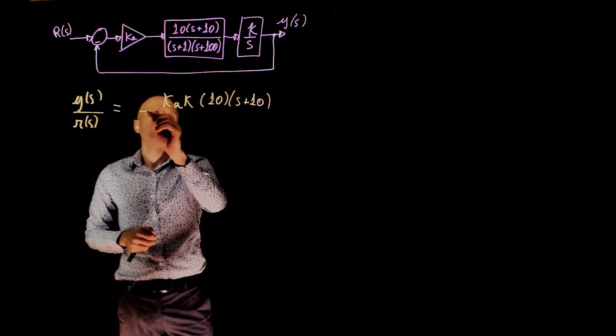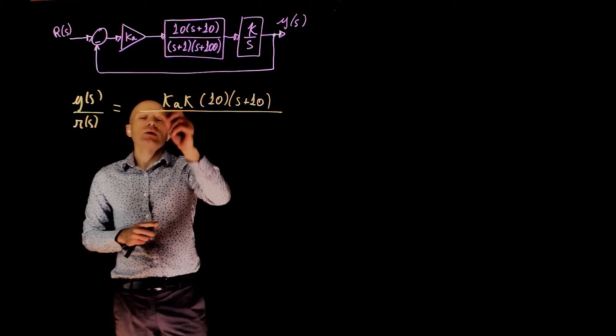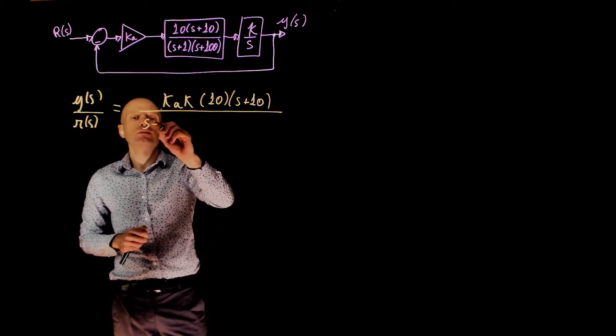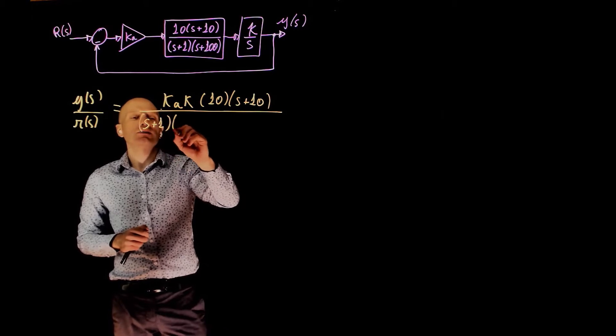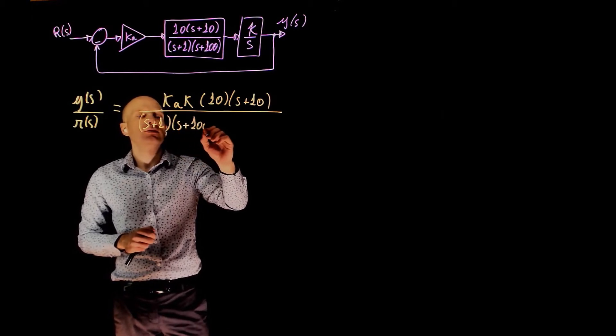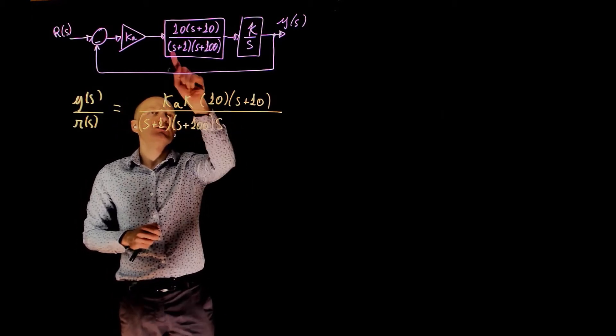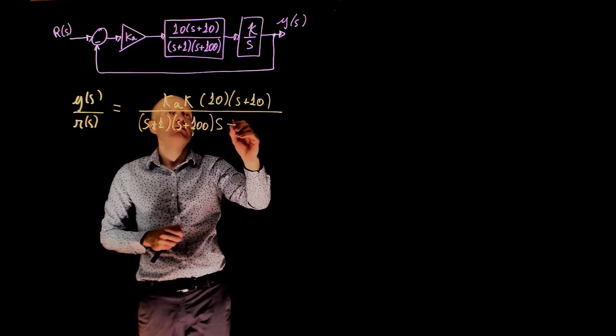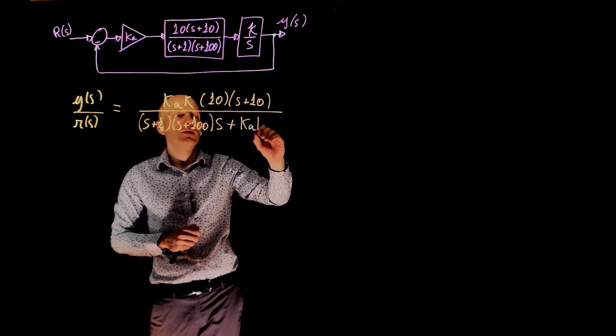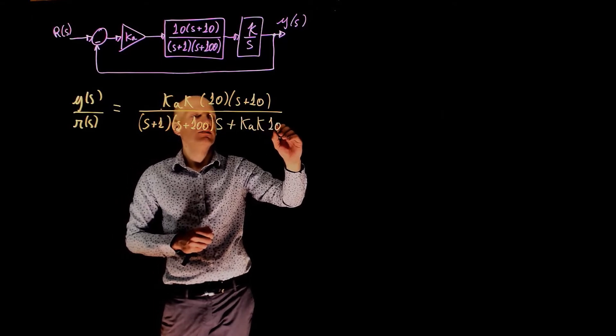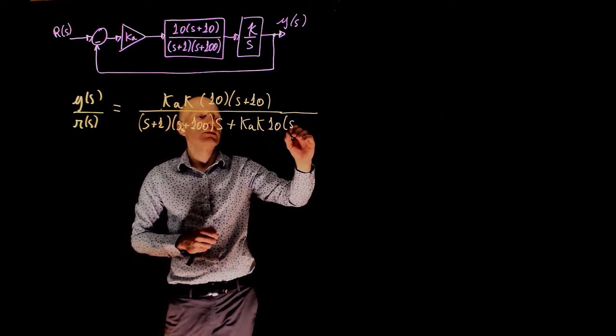Divided by s plus 1 times s plus 100 times s, the multiplication of these terms, plus the numerator, ka times k times 10 times s plus 10.